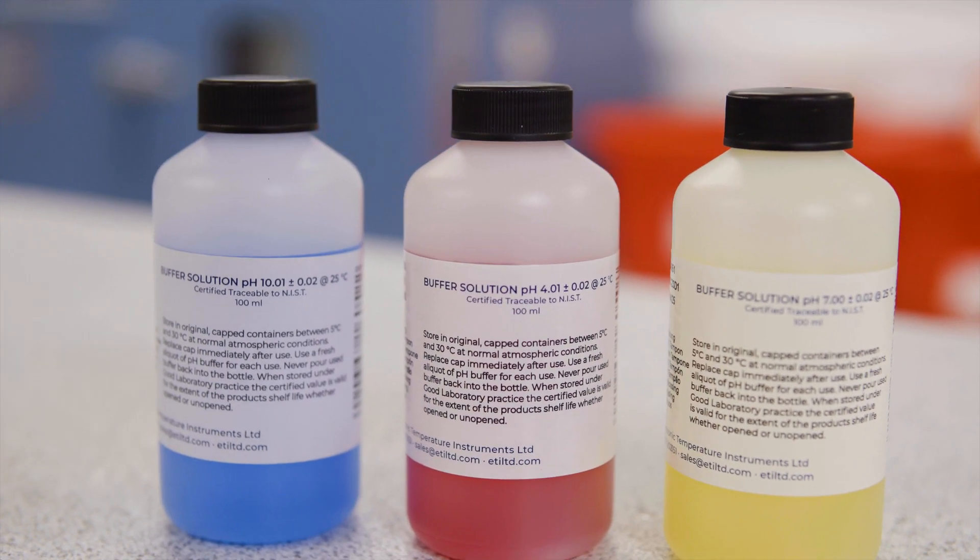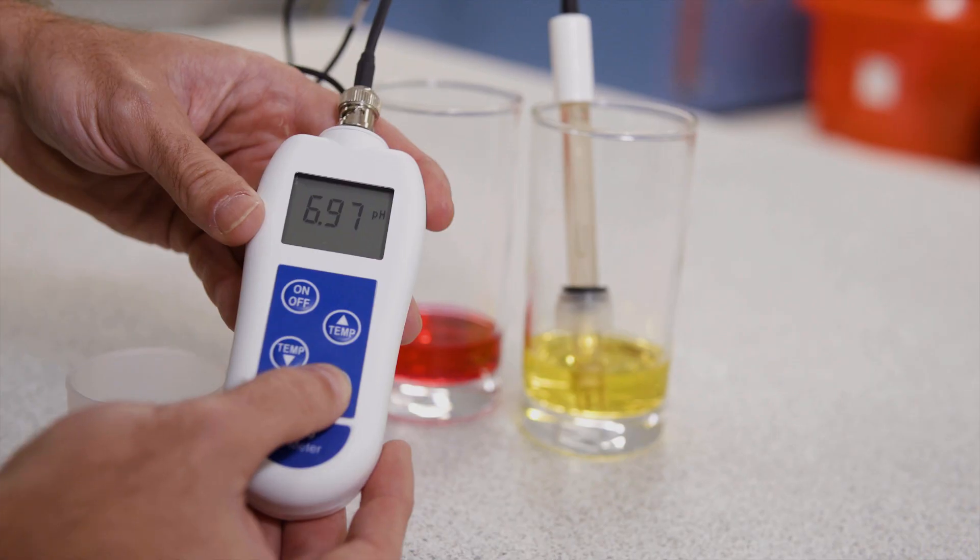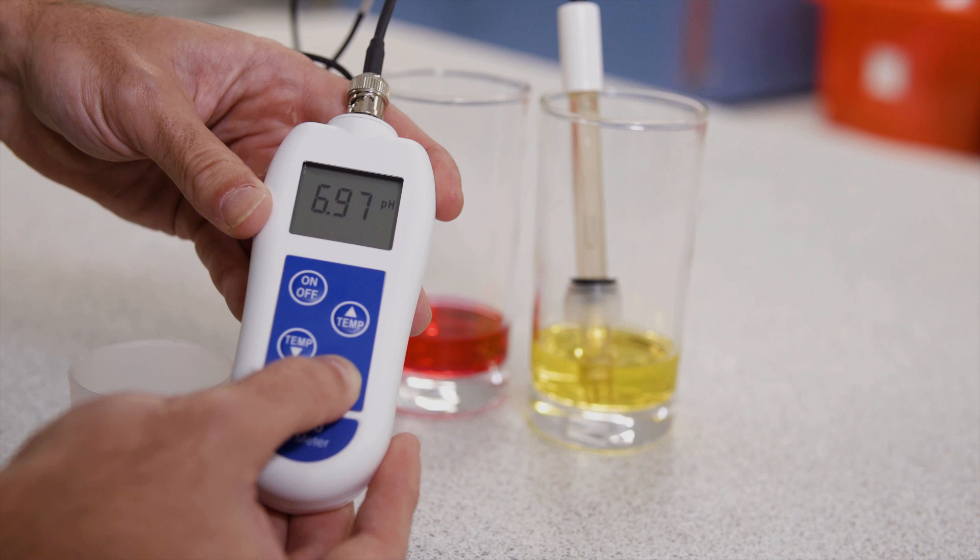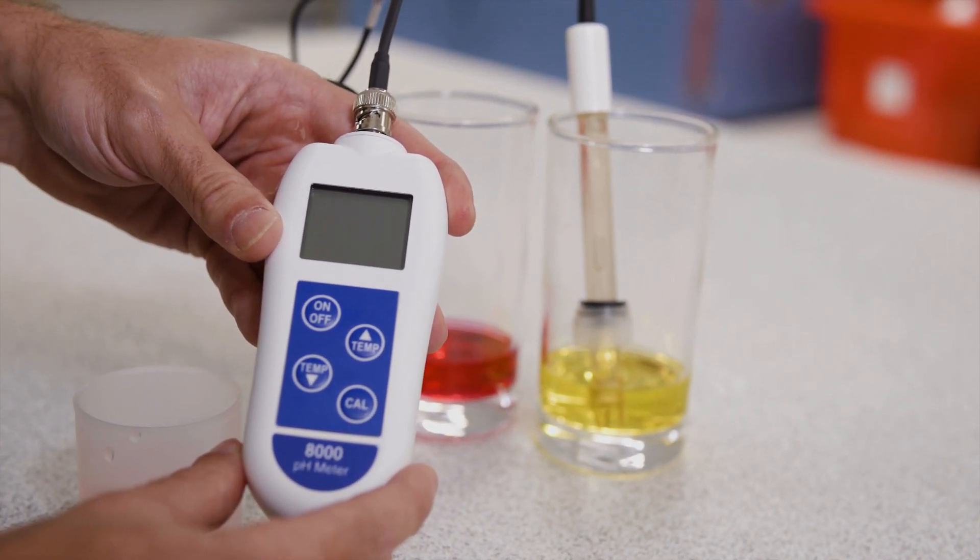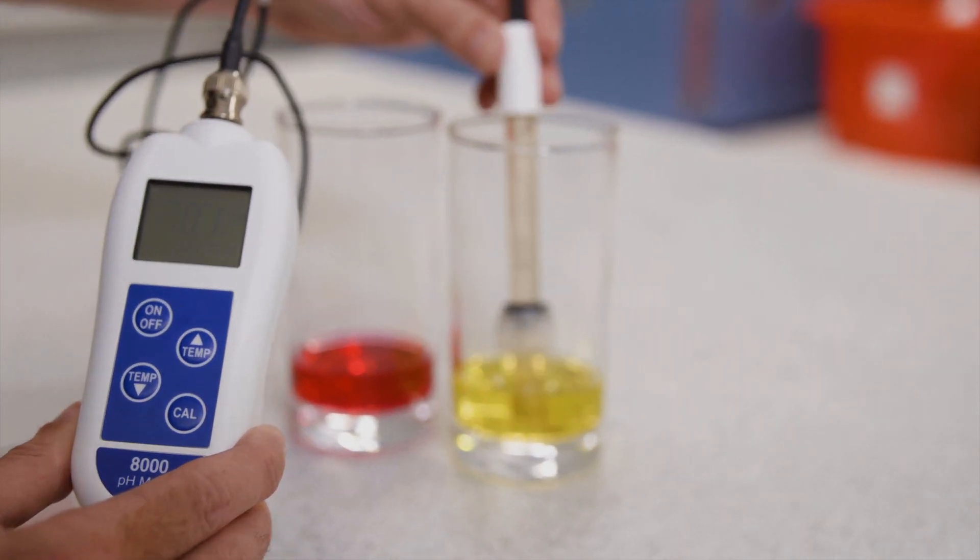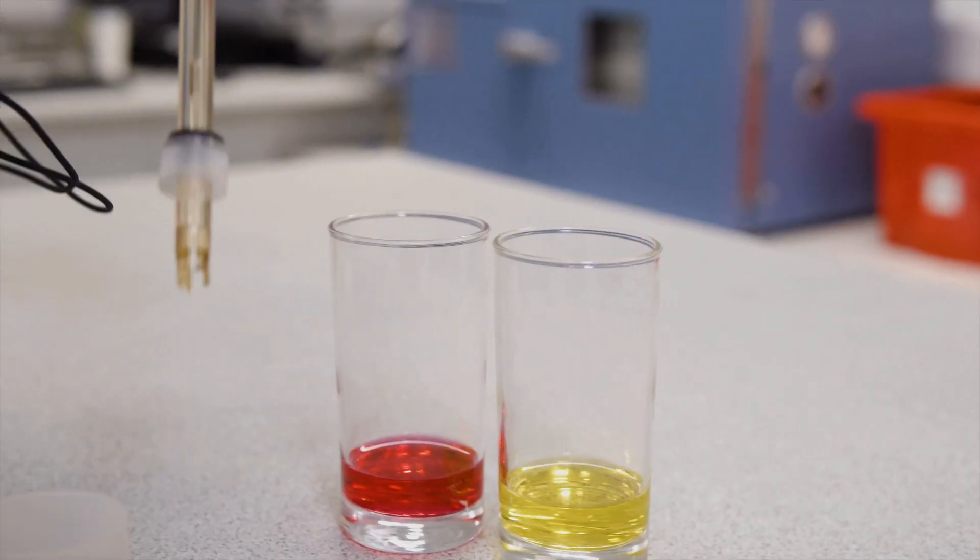pH buffers are solutions that have a specific pH value. Most pH meters have a calibration function that will automatically recalibrate the instrument when used with a pH buffer. A neutral solution with a pH of 7 is typically used.